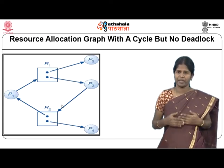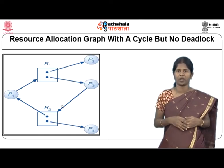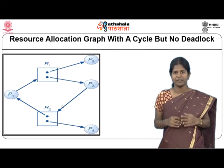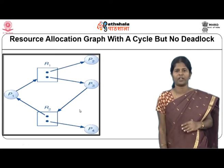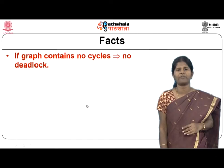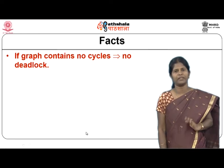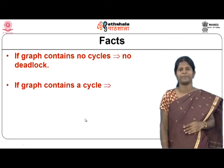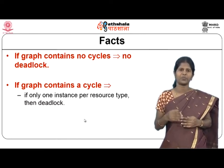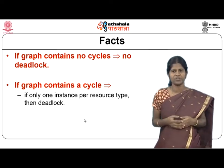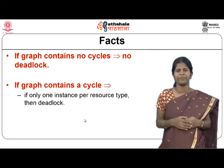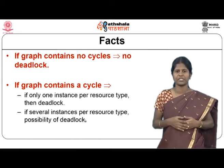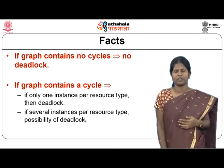So the key facts are: if a resource allocation graph contains no cycle, there is no deadlock. If it contains a cycle and there is only one instance of each resource type, then deadlock definitely exists. If there are multiple instances of each resource type and there is a cycle, deadlock may or may not exist.